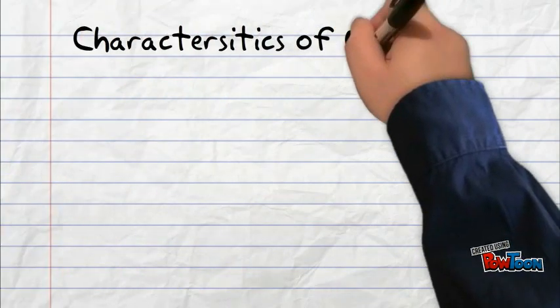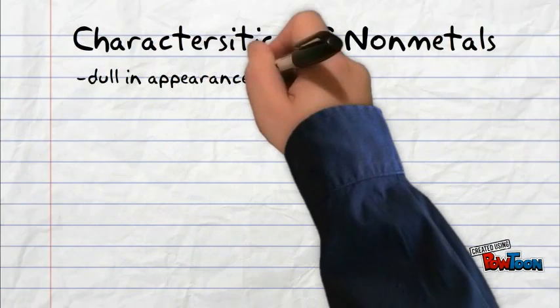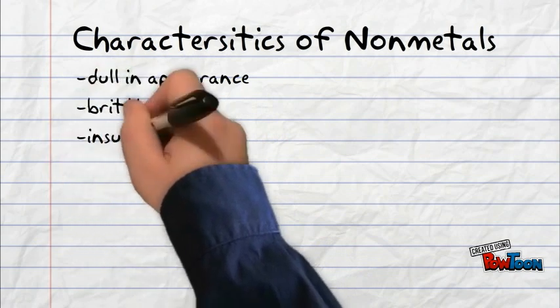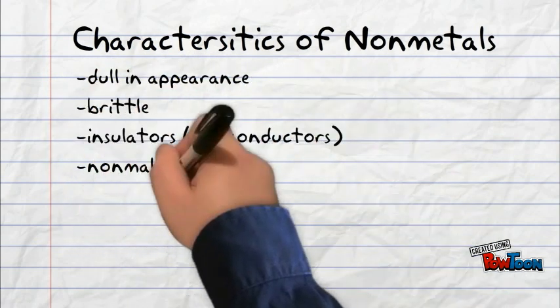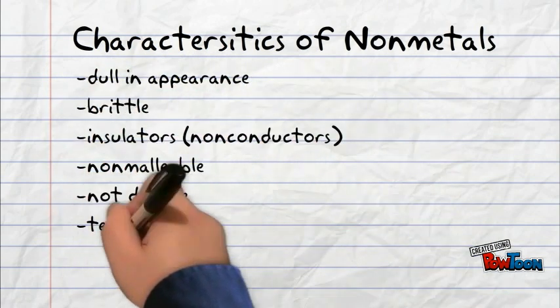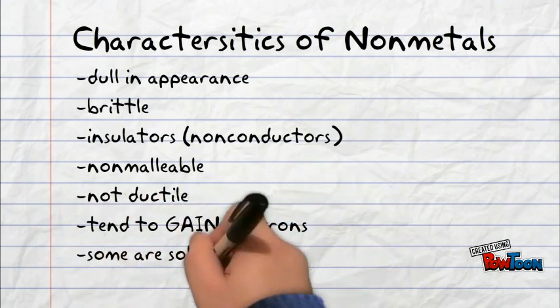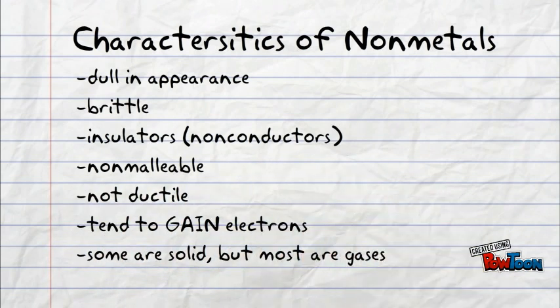Characteristics of nonmetals include that they are dull in appearance, they are brittle, they are insulators, they are non-malleable, not ductile, they tend to gain electrons, some are solid but many are gases, so really just the complete opposite of metals.